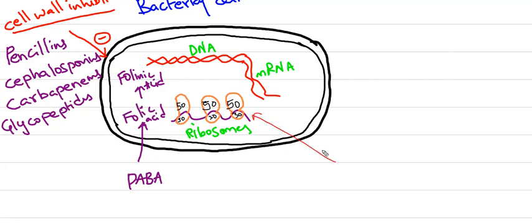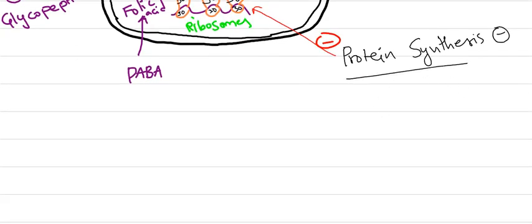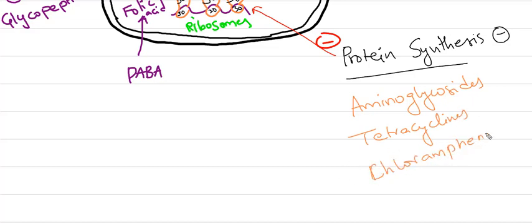Coming to drugs which block protein synthesis, we have two types: which inhibit 30S ribosome and which inhibit 50S ribosome. Which inhibit 30S ribosomes are Aminoglycosides, containing Gentamicin, Streptomycin, Amikacin, and Tetracyclines, which contains Doxycycline, Minocycline, etc.